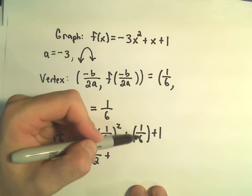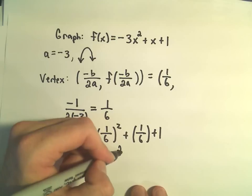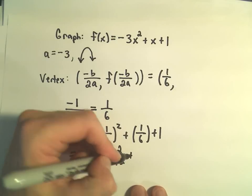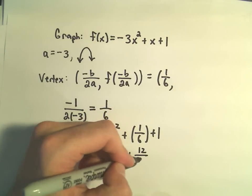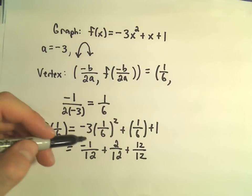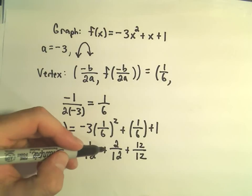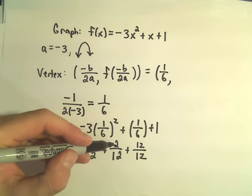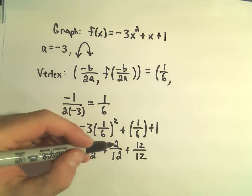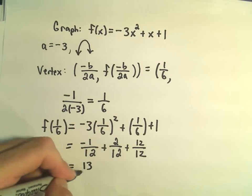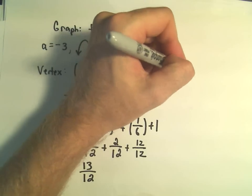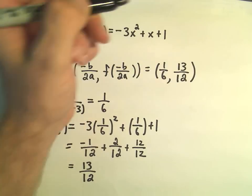So let's see. I could make this multiply top and bottom by 2. That would give me 2 over 12. I could multiply top and bottom of 1 by 12 over 12. So now negative 1 plus 2 is positive 1. 1 plus 12 is 13. So I'm getting 13 over 12 as the y-coordinate for our vertex.